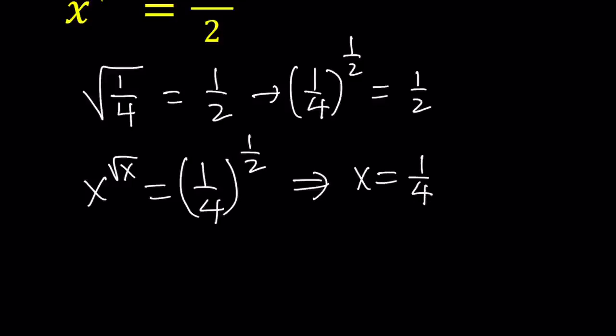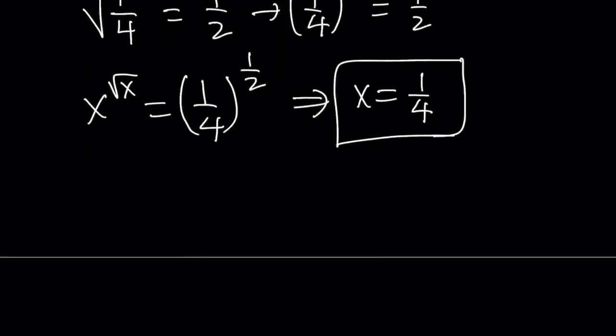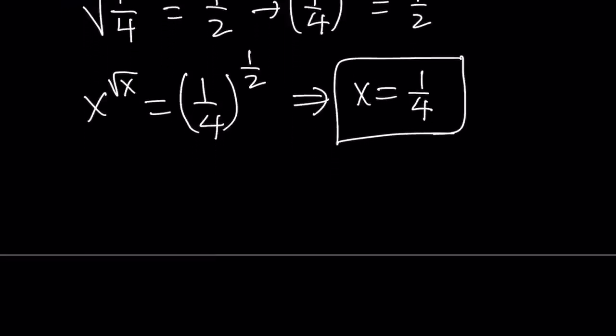Obviously, this doesn't say that this is the only solution, but it gives us one of the solutions. So, we kind of have to find all the solutions or we have to prove that there are no other solutions. Make sense? Okay, at least we know that x equals one fourth is the solution.